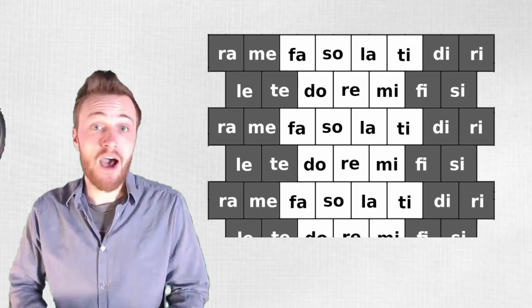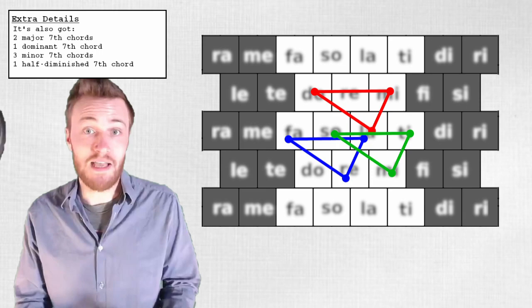Most Western musicians will be intimately familiar with the diatonic scale. It's got five large steps and two small steps. It's got three major chords, three minor chords, and a diminished chord.